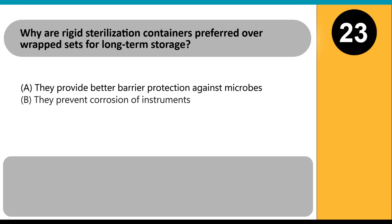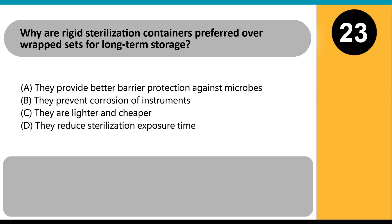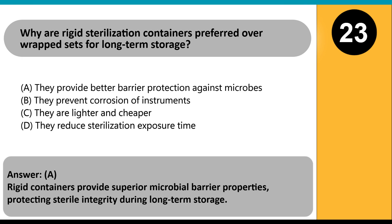Why are rigid sterilization containers preferred over wrapped sets for long-term storage? A. They provide better barrier protection against microbes. B. They prevent corrosion of instruments. C. They are lighter and cheaper. D. They reduce sterilization exposure time. Answer: A. Rigid containers provide superior microbial barrier properties, protecting sterile integrity during long-term storage.